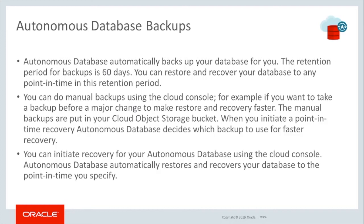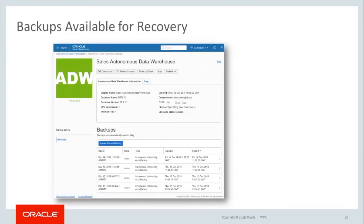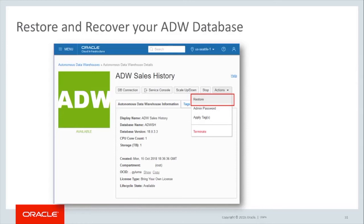Autonomous Database automatically restores and recovers your database to the point in time you specify. From the Autonomous Database console, in the lower section under the backup section, a full list of all the backups taken on this instance is listed, going back up to 60 days, which is the retention period. To restore from a backup, from the database console, from the Actions dropdown menu on the top left, select Restore.